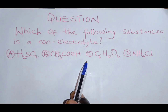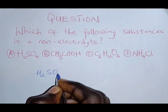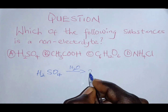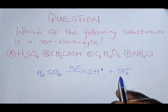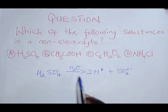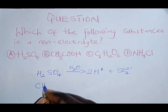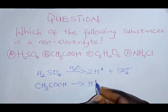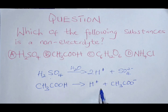In chemistry, ionic compounds are electrolytes while compounds formed using covalent bonds are non-electrolytes. If you look at H₂SO₄, when it dissolves in water it dissociates into hydrogen ions and sulfate ions. So this is an electrolyte — it can dissociate into hydrogen ions and the respective anion.